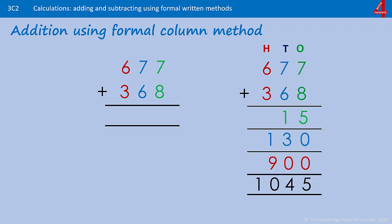This one — we are going to have another place value column when we get our answer. Starting with the ones: 7 and 8 is 15. 7 and 6 is 13, add the 1 carried is 14. 6 and 3 is 9, add the 1 carried is 10. Because there are no other columns, we put the whole of that 10 in there. You can see that we have now got something in the thousands column — we have 1045.